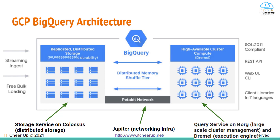The storage servers support bulk data ingest and streaming ingest. The query servers run interactive or batch queries and integrate with other GCP data processing services through connectors. They can also run query jobs on data contained in cloud storage. Under the hood, BigQuery leverages Borg, Google's large-scale cluster manager system, and Dremel, the execution engine for its services.